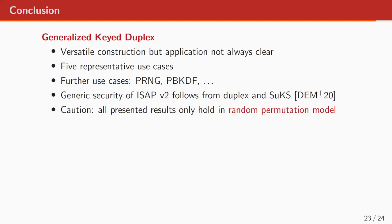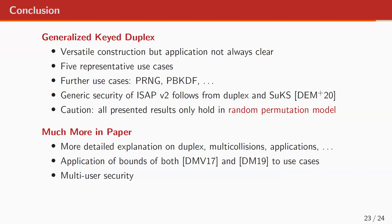To conclude: the nice thing of this generalized keyed duplex is that it's a very versatile construction covering many use cases ranging from encryption to authentication to authenticated encryption. You can also cover more use cases like PRNGs, possibly PBKDFs. Many use cases follow from this generic security result of the duplex. A nice application we've already seen is that the ISAP authenticated encryption scheme followed from the duplex result and the security result of SUCKS. All results in the paper only hold if the permutation is random. There is much more in the paper: explanation on the rationale, the multi-collision limit function, the phasing, re-phasing, more rationale behind the flagging, and all five use cases.